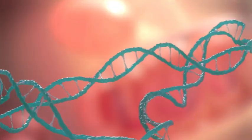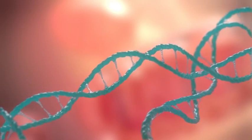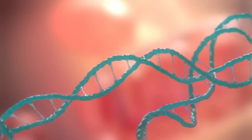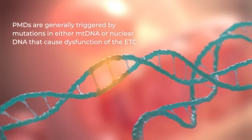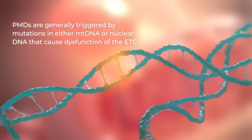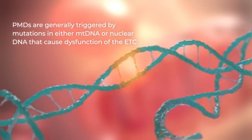Mitochondria have their own DNA, which encodes various proteins constituting the electron transport chain. Primary mitochondrial diseases are generally triggered by mutations in either mitochondrial DNA or nuclear DNA that cause dysfunction of the electron transport chain.